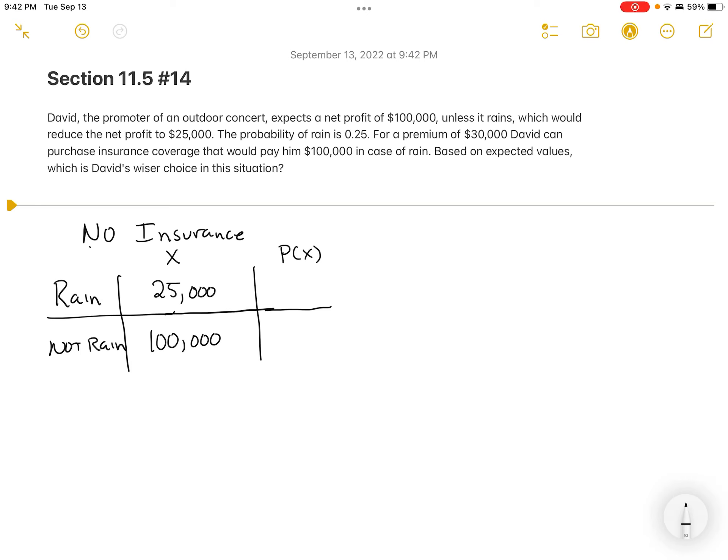Now, the probability that it rains is given to me as 0.25. That means the probability that it doesn't rain has to make up to 100%. So right now, there's a 25% chance that it's going to rain. So there must be a 75% chance that it's not going to rain. This is the same P and Q that you were used to in previous sections. So if it's a 0.25 probability that it rains, then it's a 0.75 probability that it doesn't rain.